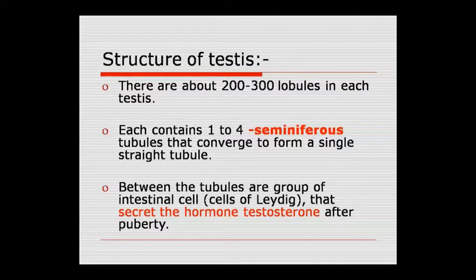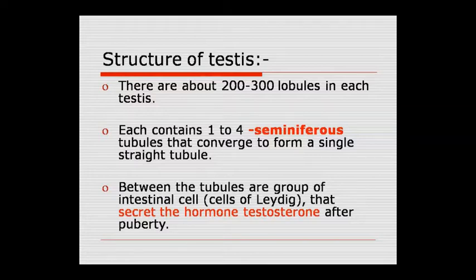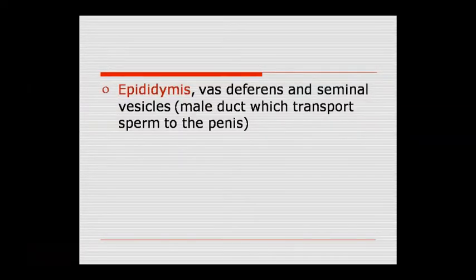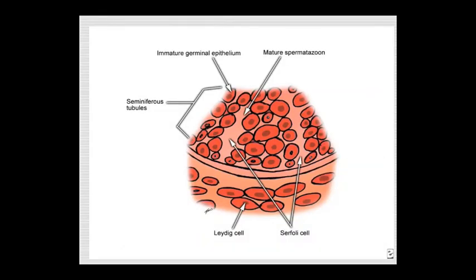Before puberty, you cannot distinguish male from female by voice or appearance. After puberty, testosterone produces these changes. The interstitial cells secrete testosterone. The epididymis and seminal vesicles are male ducts through which sperm is transported. You can see the Leydig cells and Sertoli cells in the diagram.